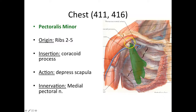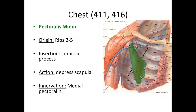Pectoralis minor inserts into the coracoid process. Because it's attaching to a structure on our scapula, that's where the action takes place — it depresses the scapula. I always remembered this because poor pec minor is always covered up by big pectoralis major, so it's depressed — hence depression of the scapula. Innervation is branch of the brachial plexus.